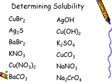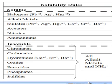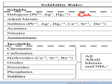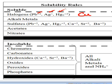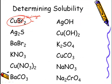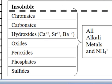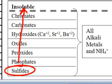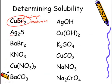CuBr2: bromine is a halogen, and halogens are soluble. Copper is not lead, silver, or mercury, so CuBr2 — copper 2 bromide — is soluble. Silver sulfide: sulfides are insoluble, and the exceptions are alkali metals and ammonium. Silver is not an alkali metal and not ammonium, so Ag2S is insoluble.